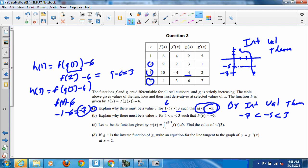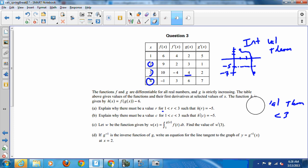Alright. The next part, part b, says explain why there must be a value for c in between the same intervals, 1 to 3, so that the derivative of h at c equals negative 5.